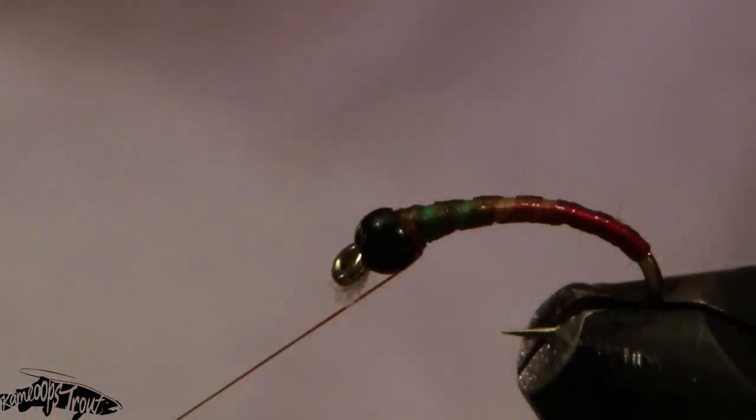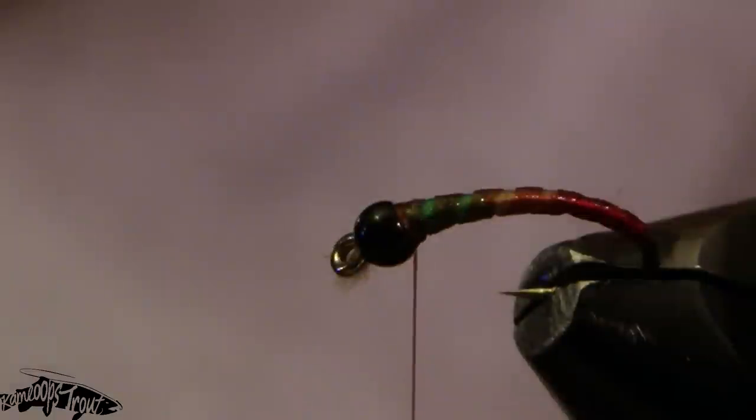For this particular fly in a bigger hook size, I'm just going to tie in some amber goose biots. We'll just cut the tips off of a few strands off the main stem.